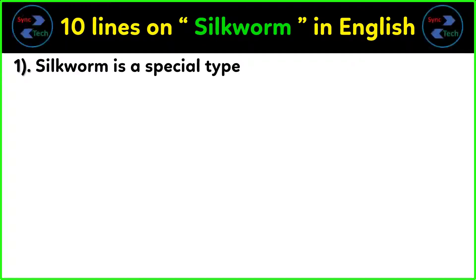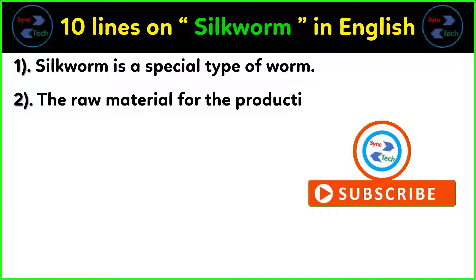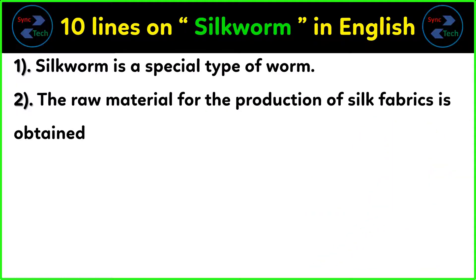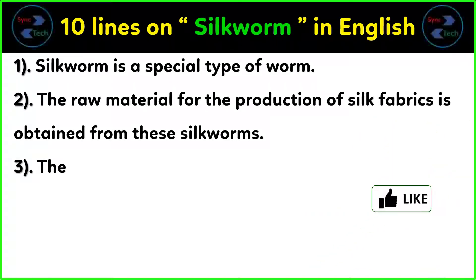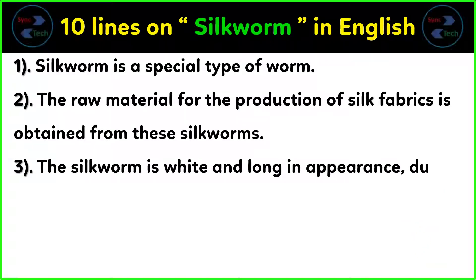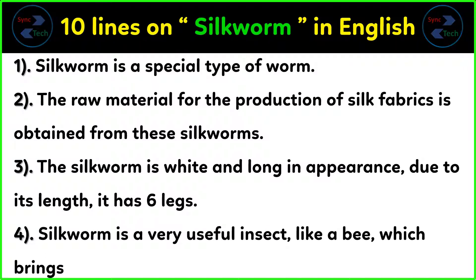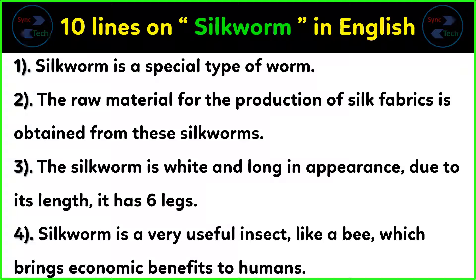Silkworm is a special type of worm. The raw material for the production of silk fabrics is obtained from silkworms. The silkworm is white and long in appearance, and due to its length it has six legs. Silkworm is a very useful insect, like a bee, which brings economic benefits to humans.